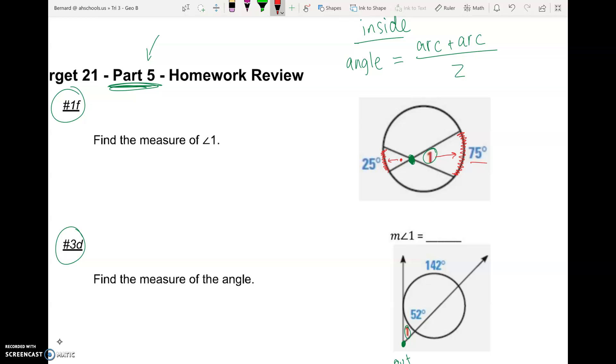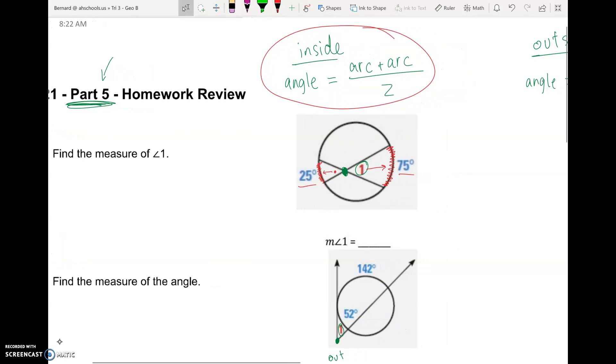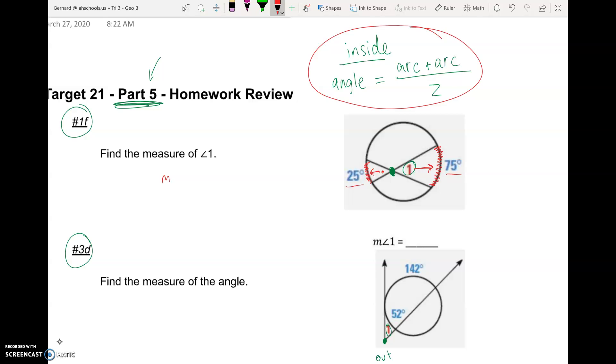And that's where we get the two arcs we're working with. Because on the inside, it's arc plus arc divided by 2. So once we identify the two arcs, again, across from the angle and across from its vertical angle, we can figure out what angle 1 is. So measure of angle 1 is going to equal those arcs added and divided by 2.